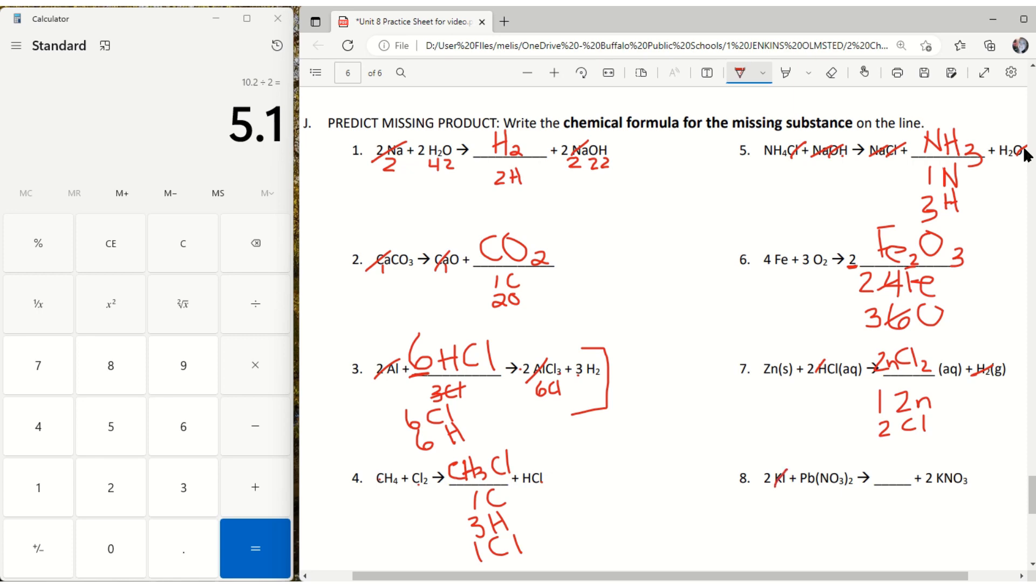Two K's. Two K's. Good. Two I's. No I's. So two I's. One PB. No PB's.